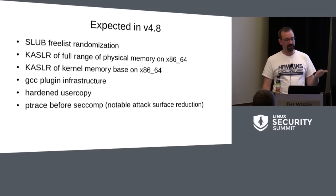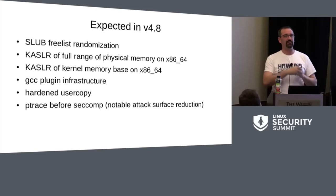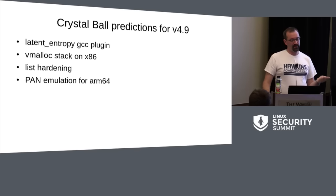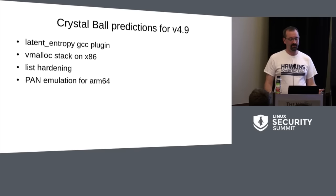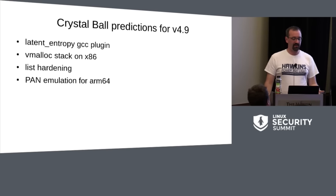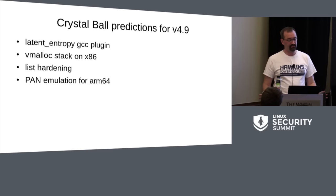We have the first step of usercopy hardening and an attack surface reduction fix: there was an intentional hole with seccomp where you could bypass a seccomp filter with ptrace — that's been fixed. My crystal ball predictions for 4.9: the latent entropy GCC plugin to get more state in the random number generator for embedded devices, the vmalloc stack on x86, list hardening, and PAN emulation for ARM64, which I'm extremely excited about. I can never predict what's going to go in, but I'm hopeful.